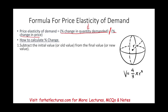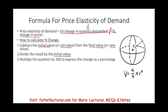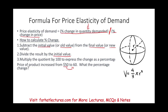Here are the steps to compute a percentage change: subtract the initial value from the final value, divide the result by the initial value, then multiply by 100. For example, if the price of a product increased from $50 to $60, the difference is $10. Divide by the initial value of $50 — that gives negative 20, so the percentage change is 20%.